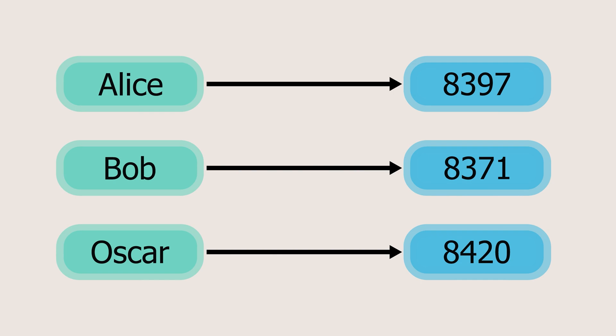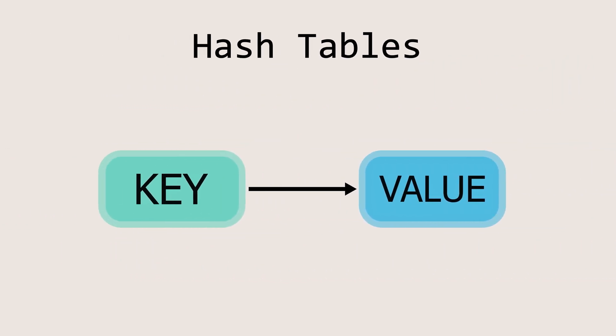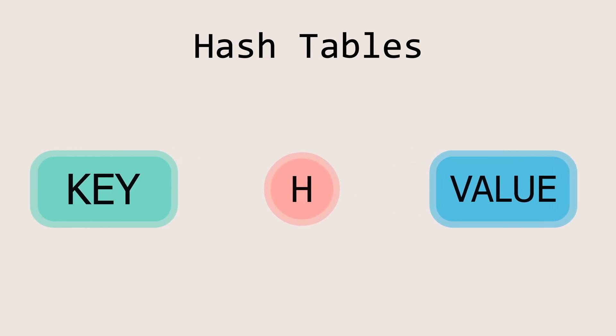If we want to retrieve the ID of, say, Bob, we can use Bob as the key to efficiently access his ID. In practice, we use something called a hash function, which takes the key as input and returns the location where the corresponding value is stored.